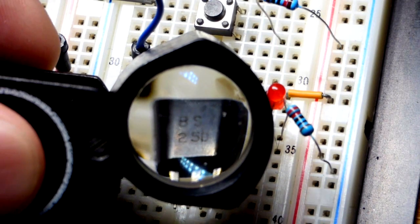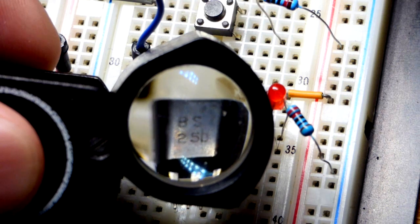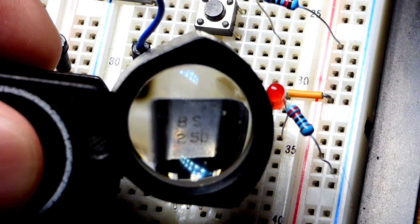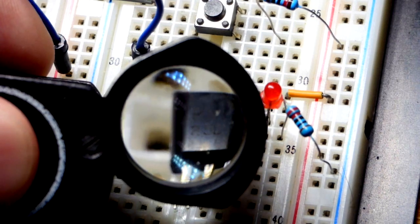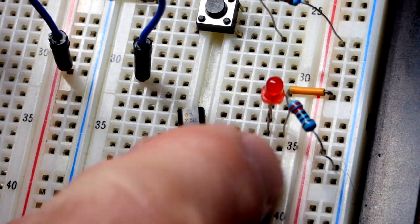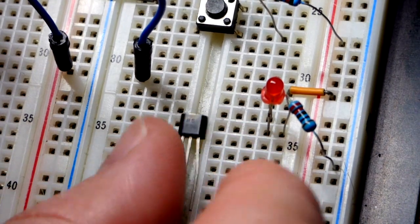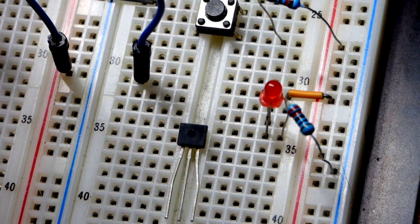In this video we're going to look at the BS 250, a P-channel enhancement mode MOSFET. You'll notice that the part number is actually on the more curved side. It's flat right there but more curved on the back of the transistor. Let's flip it around and you can see the actual flat side there.